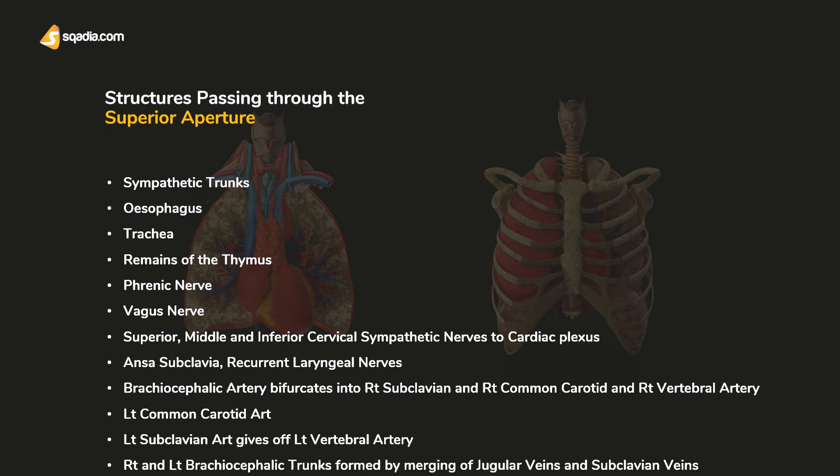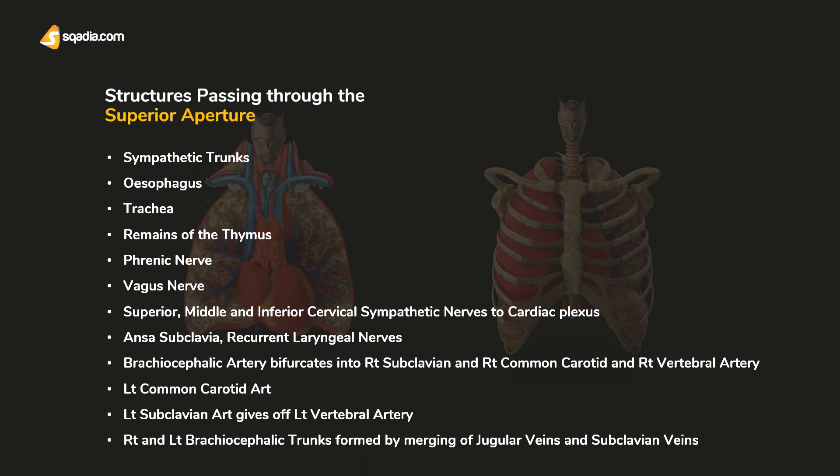Here is a list of all of the structures passing through the superior aperture. As you can see, I'm not going to go through the list. You can read it yourself. We have viscera like the trachea, esophagus, the apices of the lungs with pleura, and the remains of the thymus. And we have the large blood vessels, the smaller blood vessels, some muscles, and here are all the nerves.